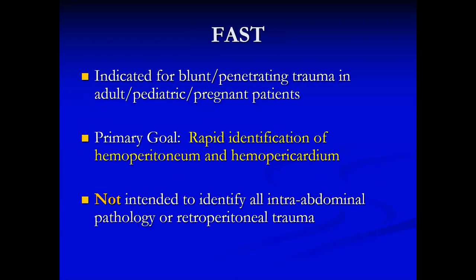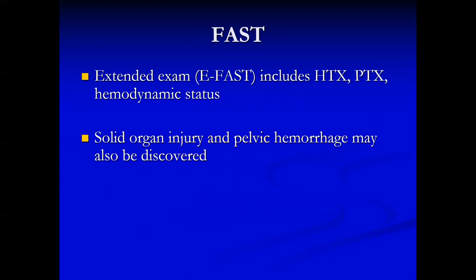The FAST exam — basically anybody with a bad trauma, whether it's blunt or penetrating, whether they're an adult, pediatric, or pregnant patient, they should all have a FAST exam. The primary goal is to identify blood in the peritoneal cavity and blood in the pericardial space. It's not intended to identify all intra-abdominal pathology or retroperitoneal trauma. The extended exam includes hemothorax, pneumothorax, hemodynamic status, solid organ injury, pelvic hemorrhage, and some folks are even looking at long bone fractures.